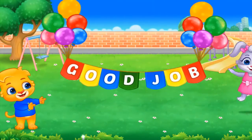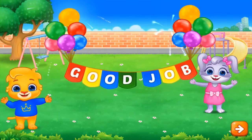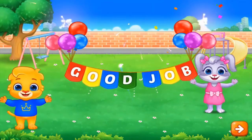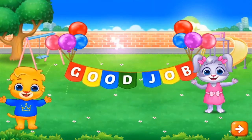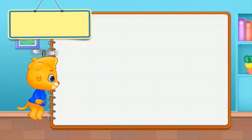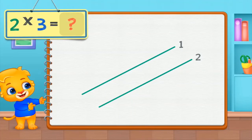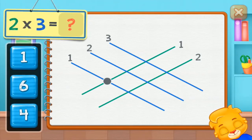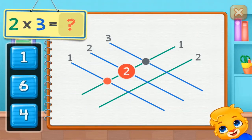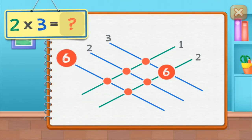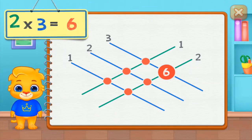Good job! Two times three equals one, two, three, four, five, six. Two times three equals six.